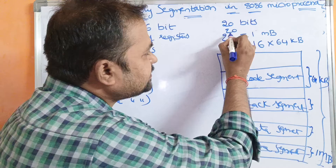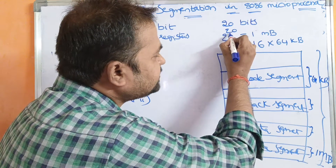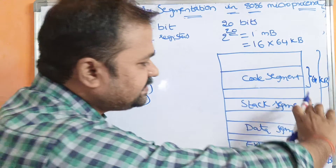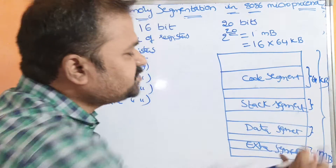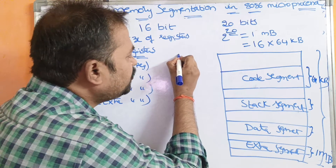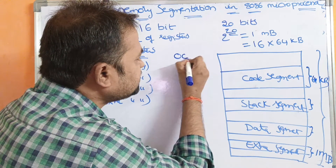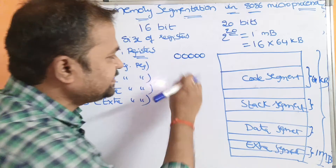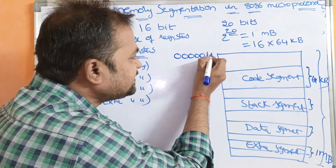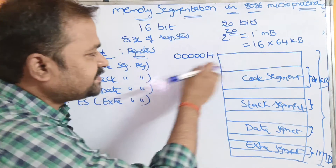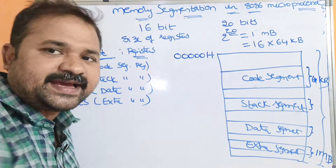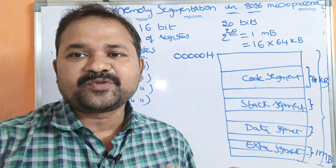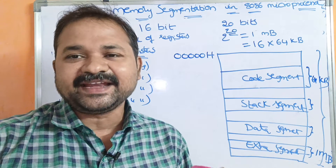Here, the size of the address is 20 bits. Let us see the range of this main memory. Totally we have to use 5 digits — this is nothing but hexadecimal digits. We know that each hexadecimal digit represents 4 bits. For example, the number 10 means A in hexadecimal.